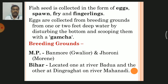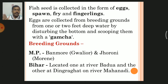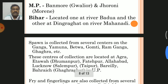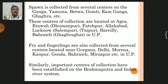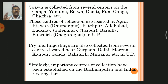Important breeding grounds in India are located in Madhya Pradesh at Banmore, Gwalior, and Joharani in Morena; in Bihar; one at river Budua and another at Digha Ghat on river Mahanadi. Spawn is collected from several centers on the Ganga, Yamuna, Betwa, Gomti, Ram Ganga, and Ghagra rivers.